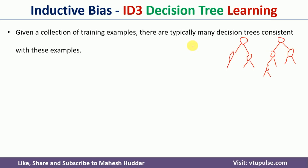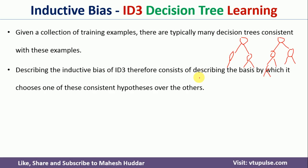Now, the question here is: when we have one tree, there will not be any bias — we will use that particular tree to classify the new examples. But when you have more than one tree consistent with the given training examples and you want to use these trees in the real world, which one are you supposed to use? Should I use this one to classify the new example, or should I use this one? That is what is called the inductive bias in ID3 algorithm.